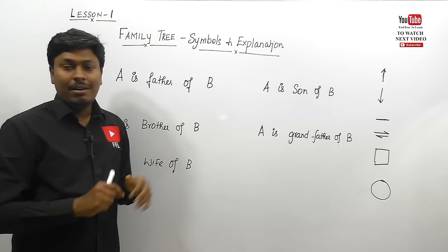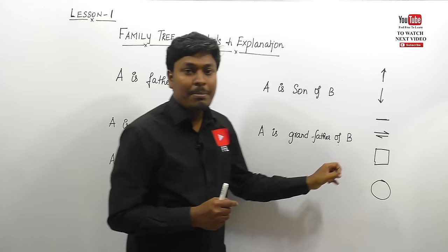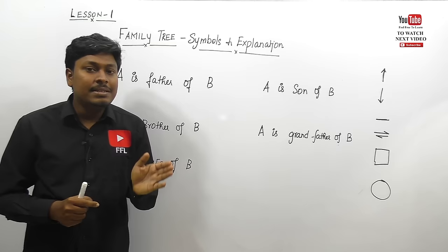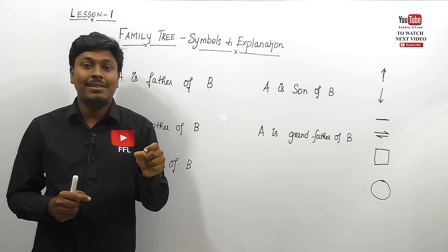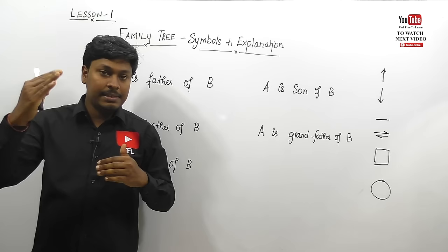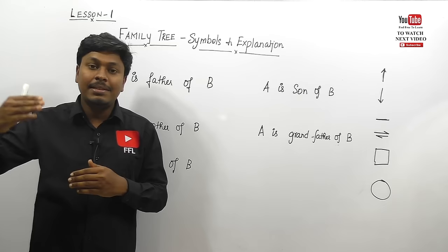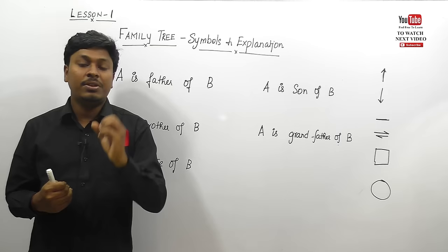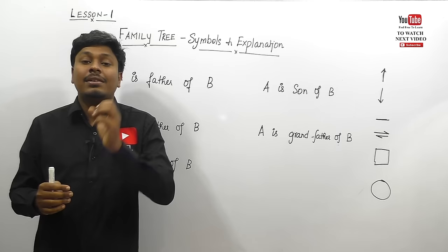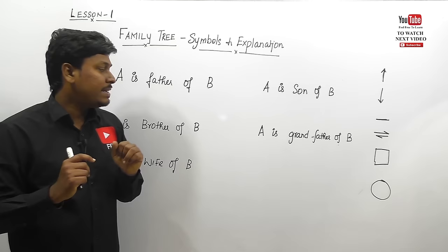There are only six different symbols: up arrow, down arrow, a small line, a box, and a circle. The box is denoted for a male person and the circle for a female person. The first generation includes father, mother, uncle. The second generation includes grandfather and grandmother. Brother, husband, and wife are zero generation.